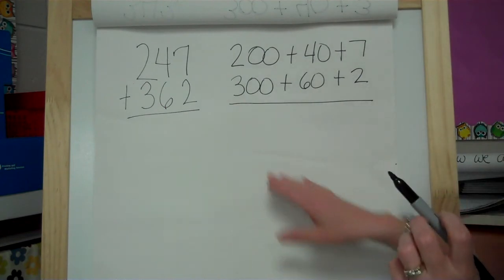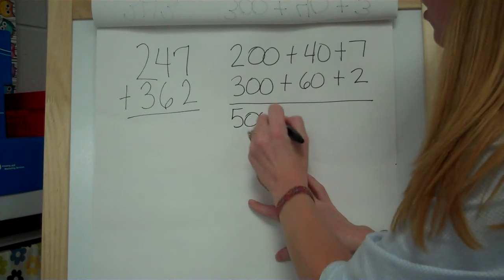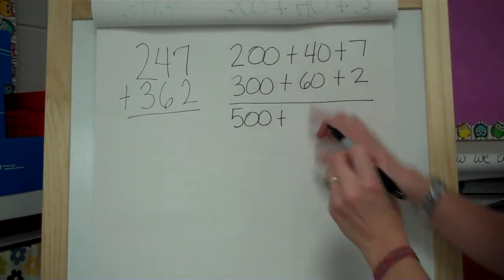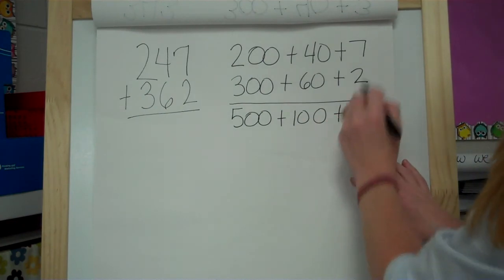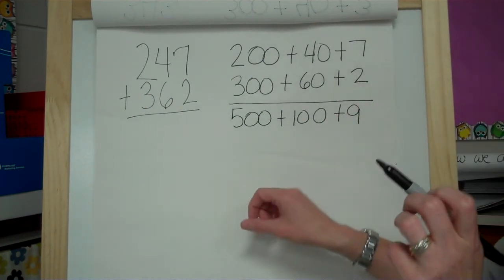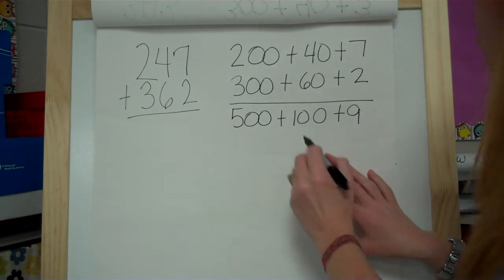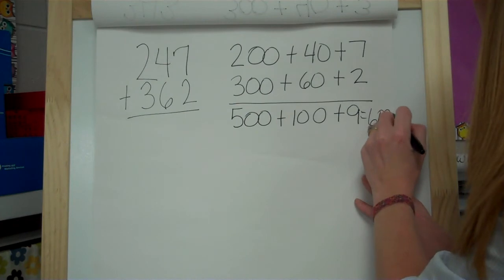And then we're going to add those up. So 200 plus 300 is 500. 60 and 40 is 100. And then 7 plus 2 is 9. So we add all those up and our answer is 609.